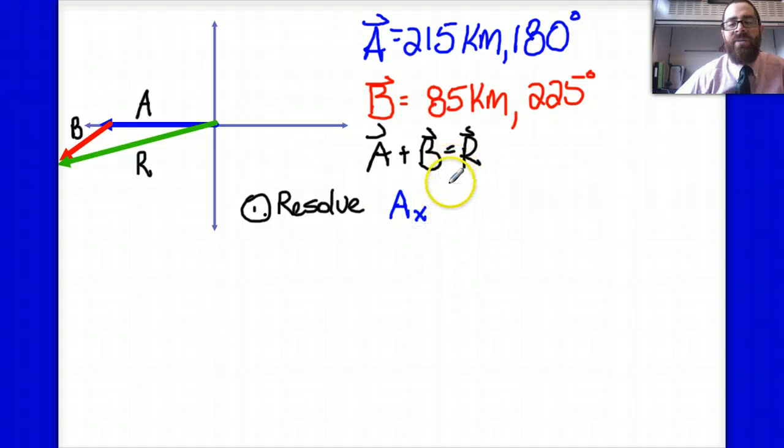All of vector A is in the x direction. So I could say, alright, well, 215 kilometers is my x component of vector A, but specifically, that's negative. It's pointing to the left.